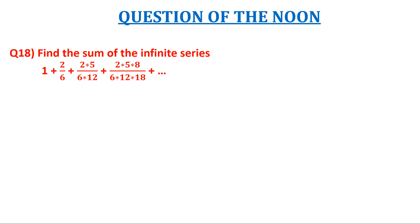The options are A: 4 raised to 2 by 3, B: 4 raised to 1 by 3, C: 4 raised to minus 2 by 3, and D: 4 raised to minus 1 by 3. This is a very simple question of the sum of the series.